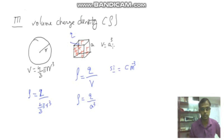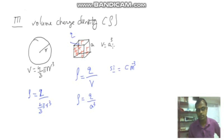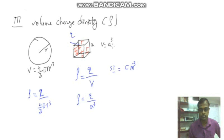So this is a way to represent the three cases: linear charge density lambda, surface charge density sigma, and volume charge density rho. I hope you understand this.